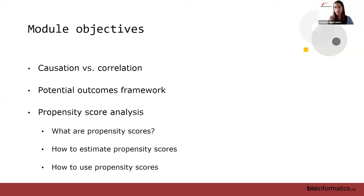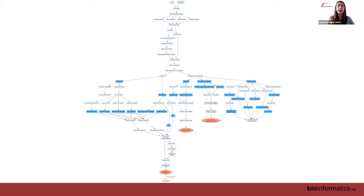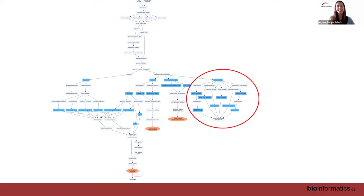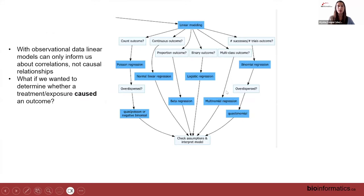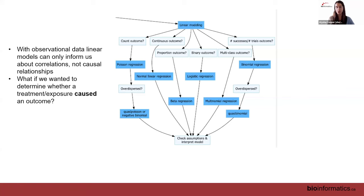We'll also cover how to actually use propensity scores in your analysis to estimate a causal treatment effect. Going back to our decision tree, we're not necessarily going down a specific path, but I would say it would be in this estimation/understanding path. Initially when we were doing linear modeling, we typically assumed your data is going to be observational — though some of you in medical fields will have experimental data.